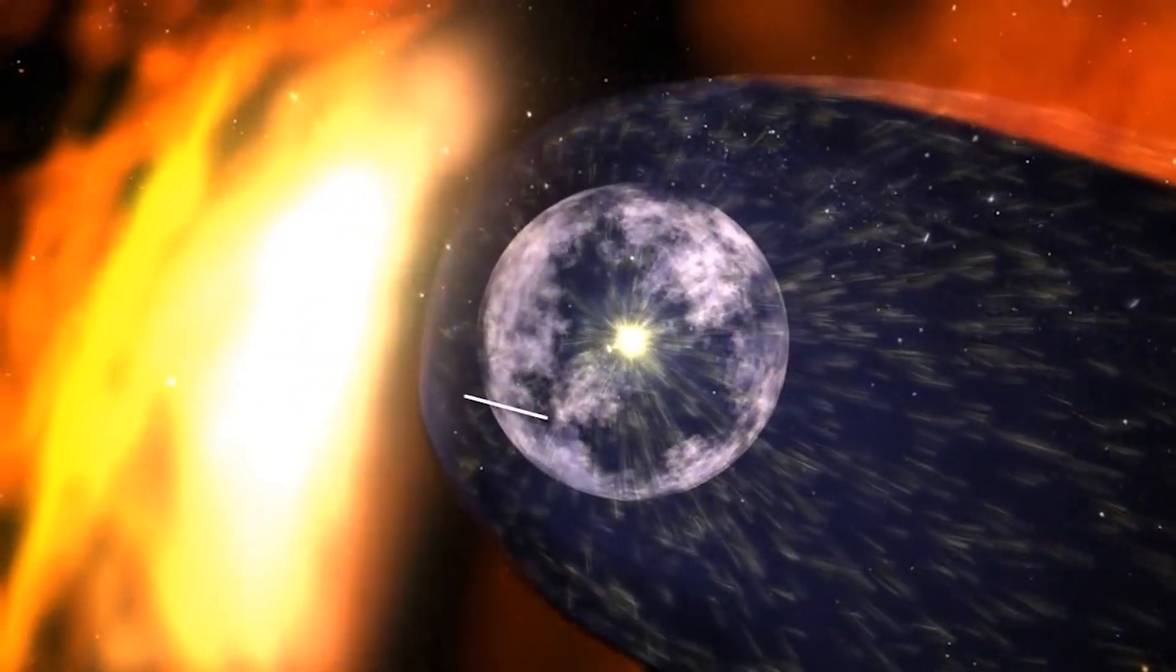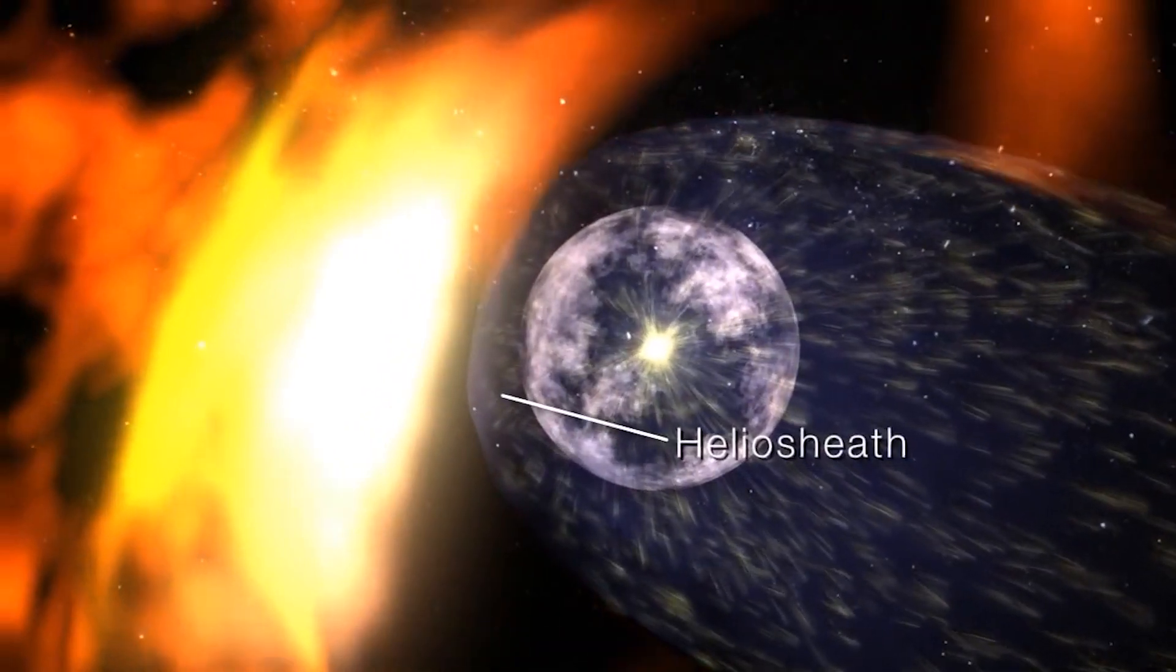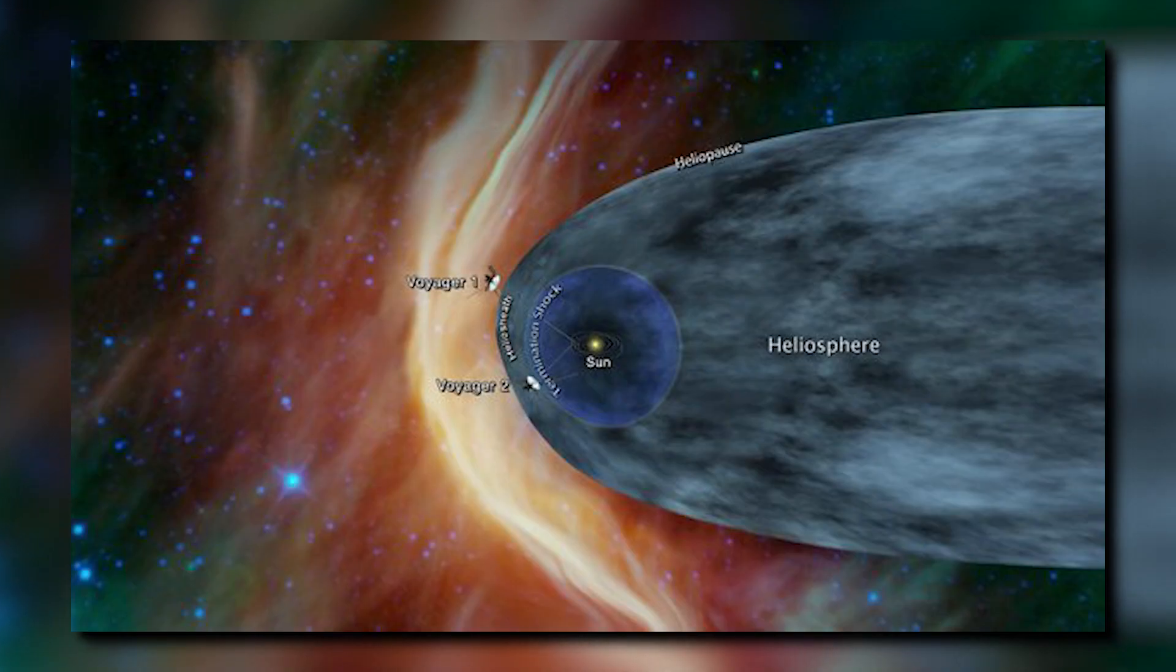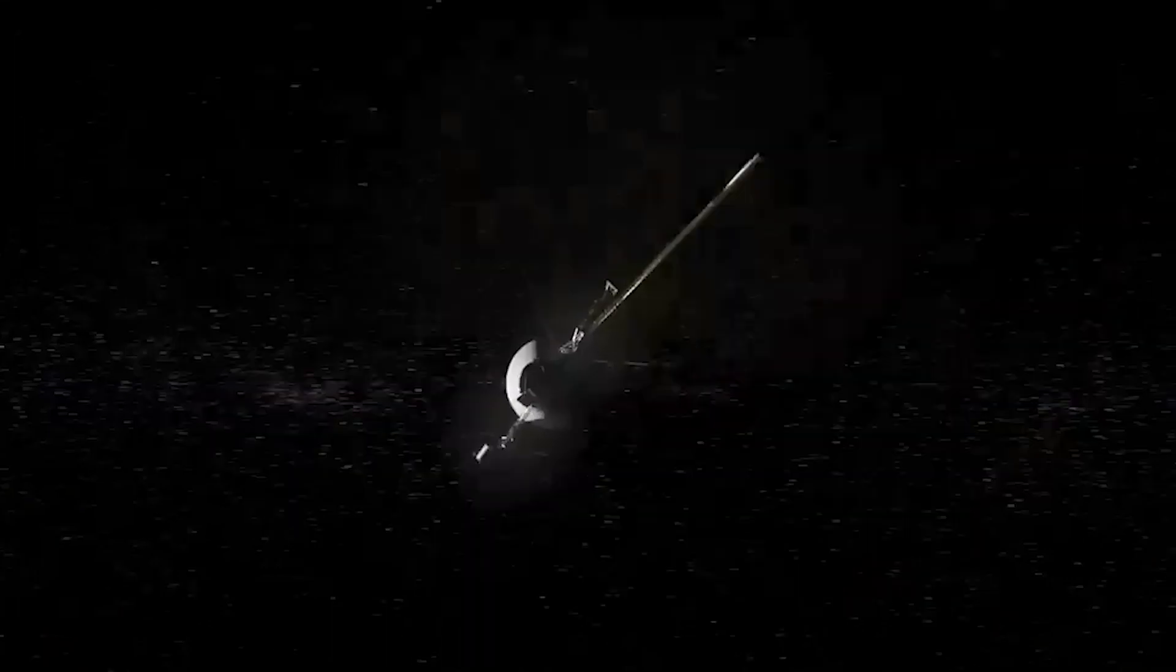The heliosphere, a stream of charged particles believed to originate from the Sun and continue past Pluto's orbit, is theorized to have a teardrop shape. Voyager 1 was sent to study the outer regions of the solar system due to the Sun's passage through the interstellar medium.